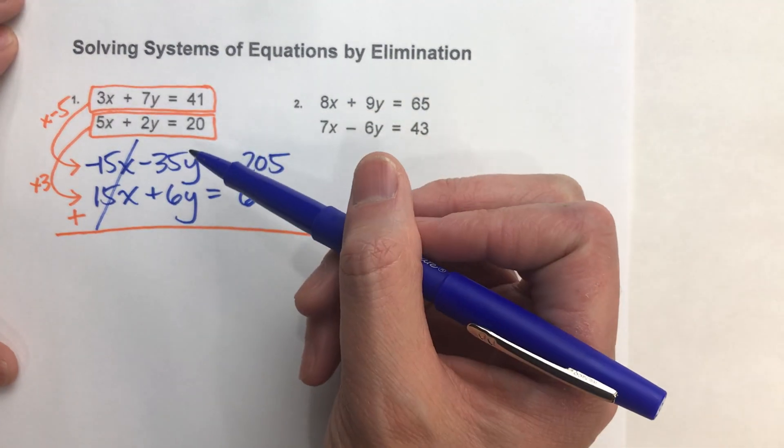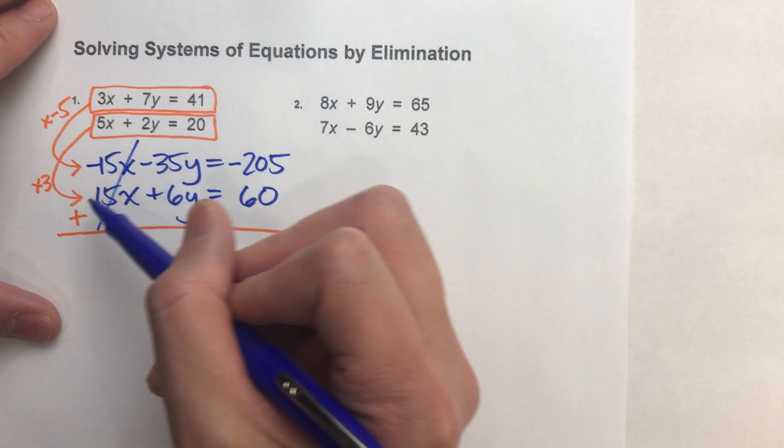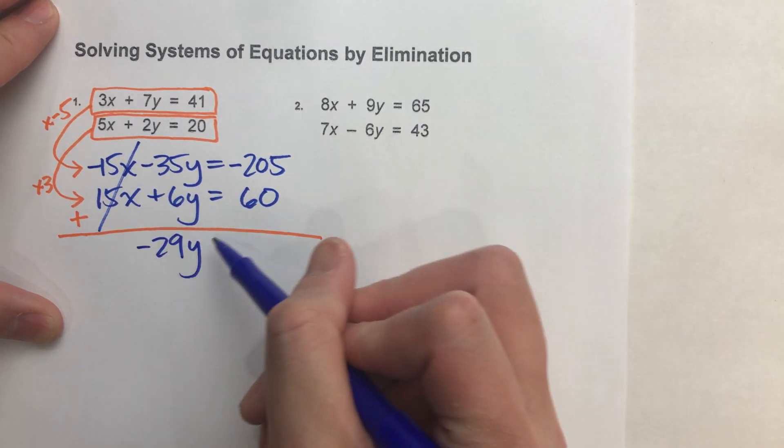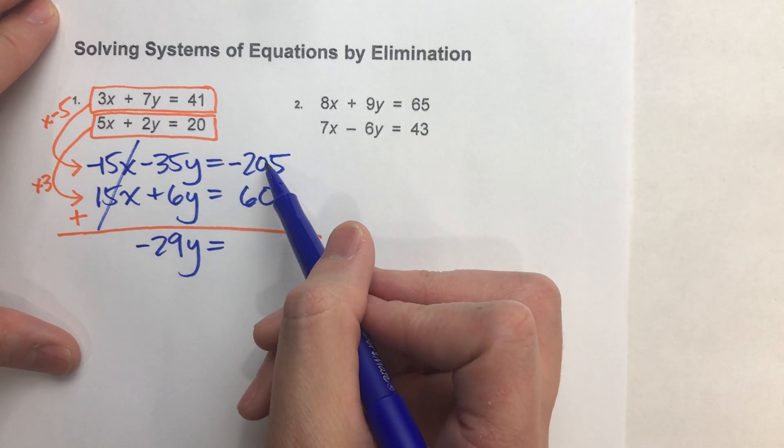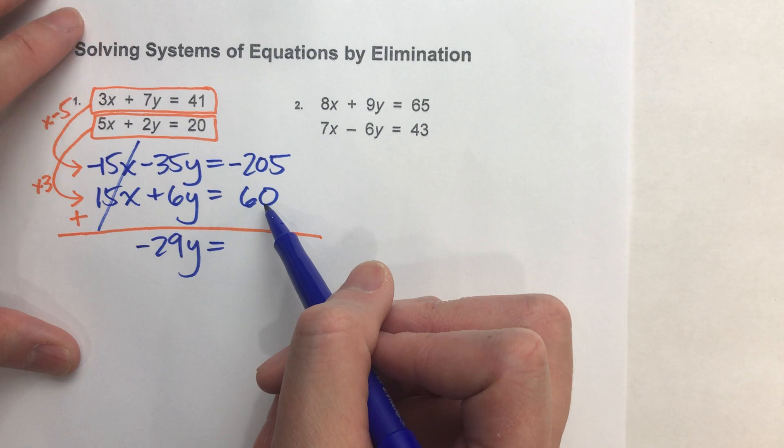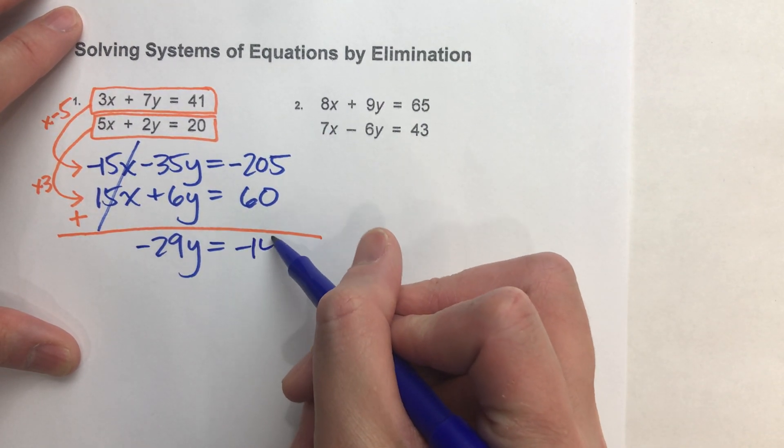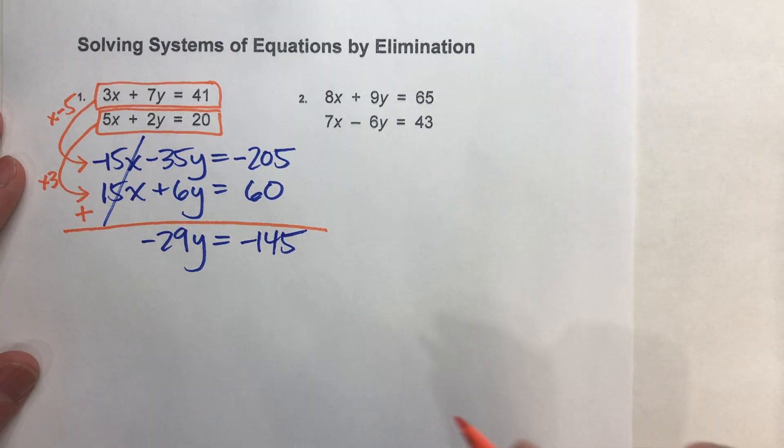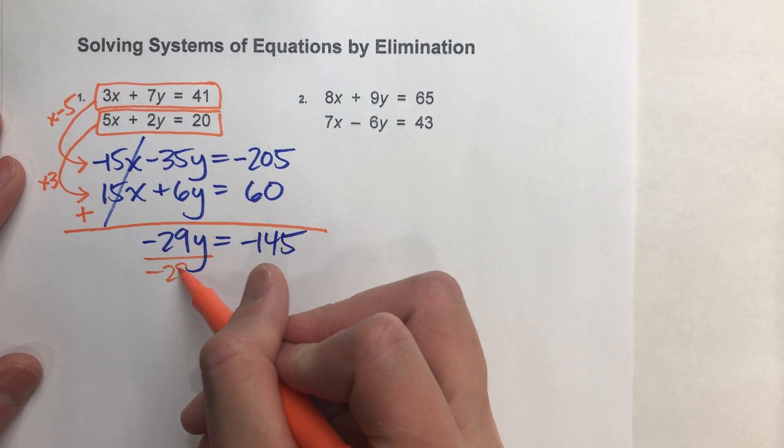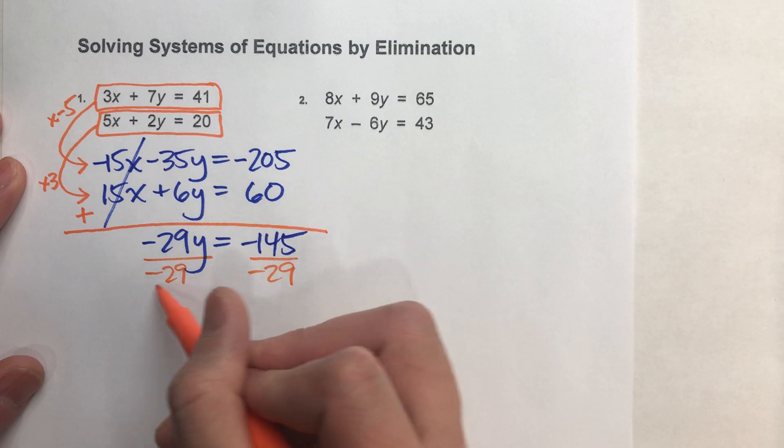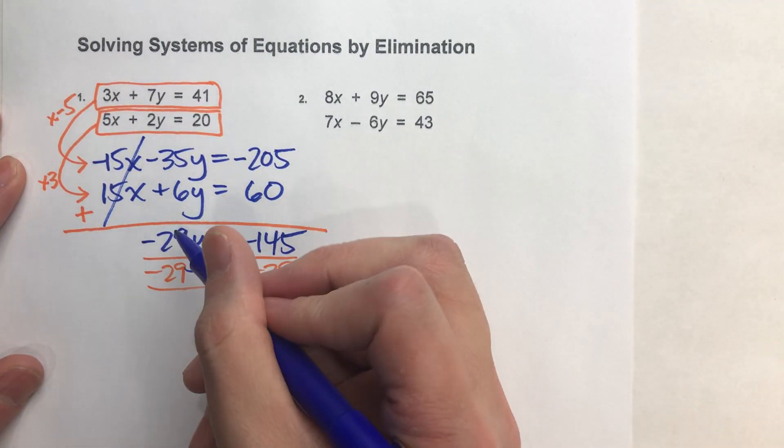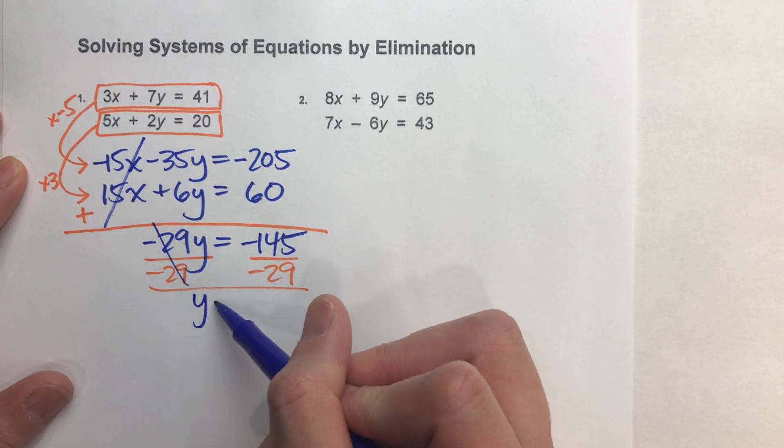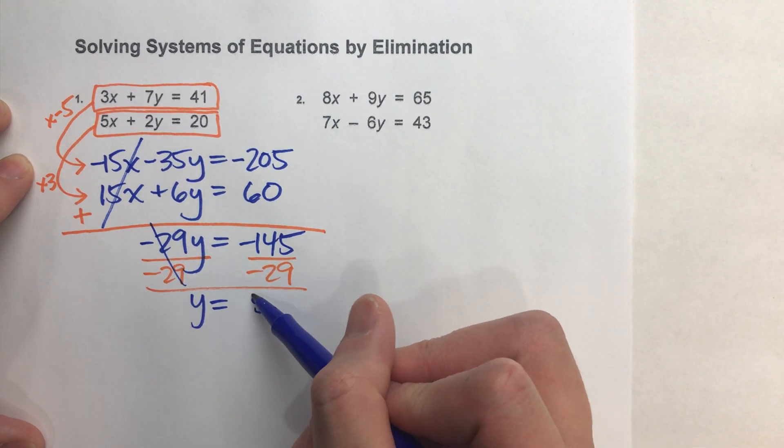Now let's do the rest of it. Negative 35y plus 6y is negative 29y. On the other side, negative 205 plus positive 60 is negative 145. So this is a pretty easy equation to solve for y. I'll just divide both sides by negative 29. When I do that, negative 29s cancel each other, I end up getting positive 5.